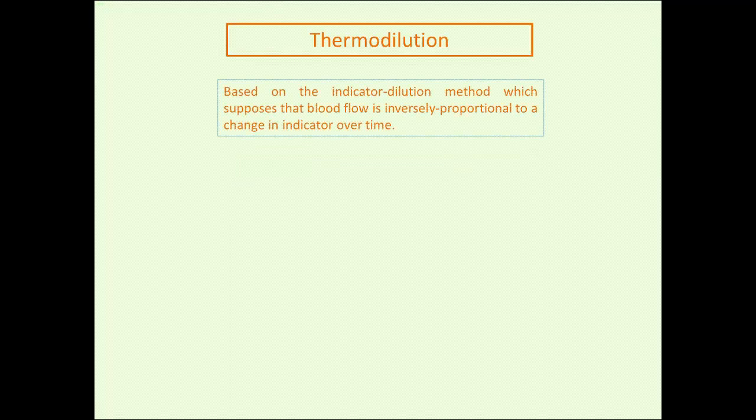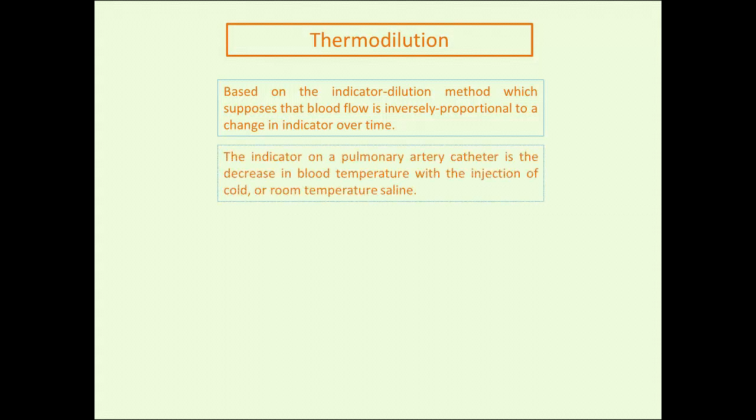Thermodilution cardiac output is based on the indicator dilution method, which supposes that blood flow is inversely proportional to a change in indicator over time. This indicator in the pulmonary artery catheter is blood temperature.